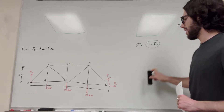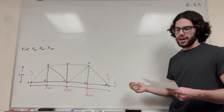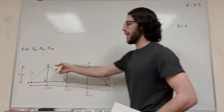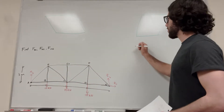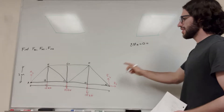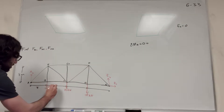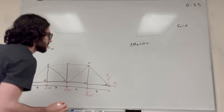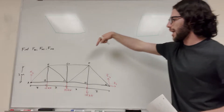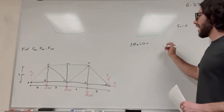Next, let's find A of Y and E of Y. There are two unknowns in the Y direction, so we can't just sum forces in Y. Instead, we're going to take a moment. Let's take the sum of the moments at A — that will get rid of A of Y, leaving just one unknown. Each panel is three meters. The 12 kN load pushes down, making us rotate clockwise around A, so it's negative.